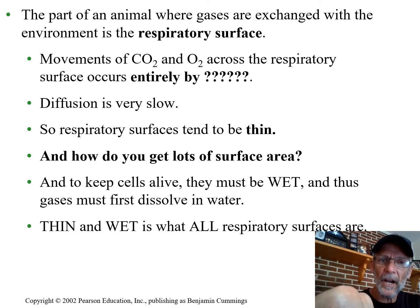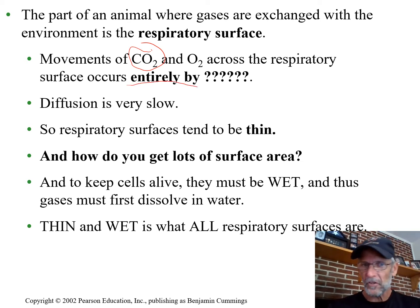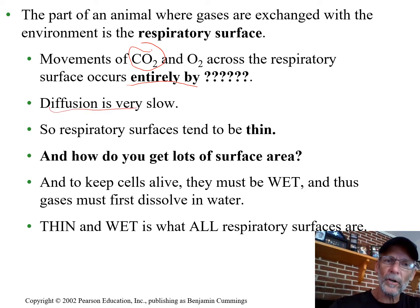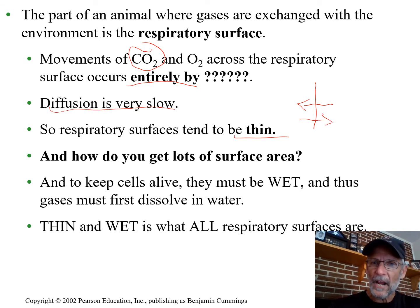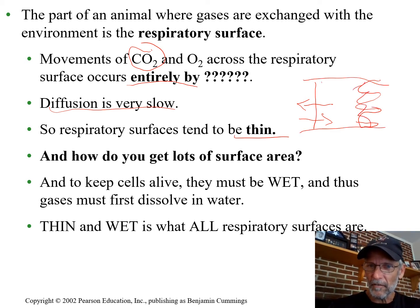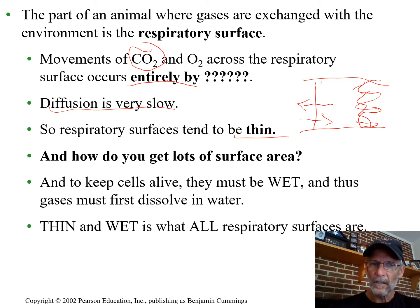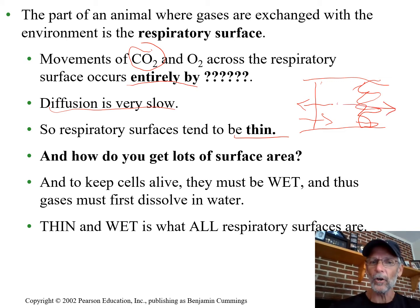Carbon dioxide, also nonpolar like oxygen, crosses the respiratory surface entirely by simple diffusion — not facilitated, and not active transport. That diffusion is very slow, which is why thin and wet is what all respiratory surfaces have to be. And if you squiggle that surface up so that in the same amount of space you have a lot more surface area, that structural adaptation makes the efficiency of gas exchange — the functional outcome — much more efficient.